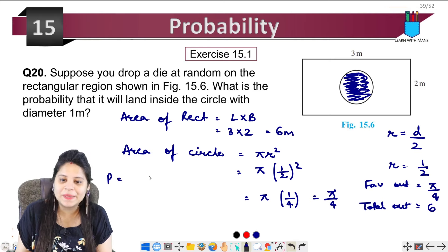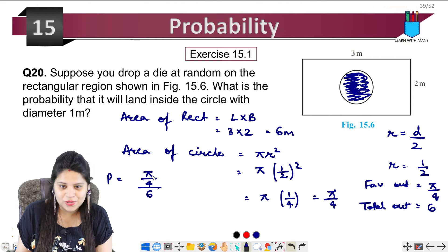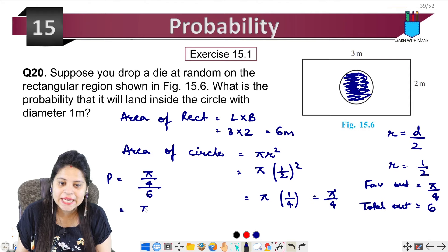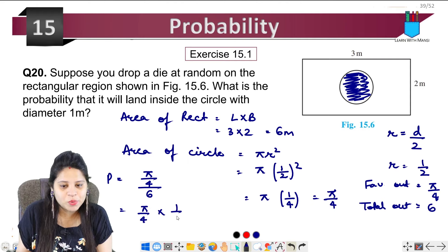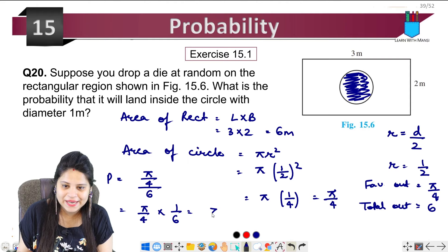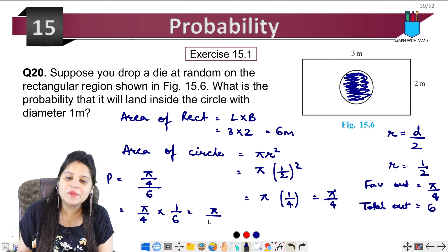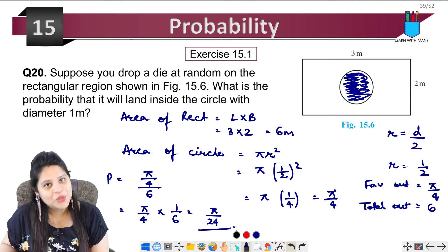We know the probability is favorable upon total. So it's pi upon 4 divided by 6, which is pi/4 × 1/6, equals pi upon 24. So this is pi upon 24.